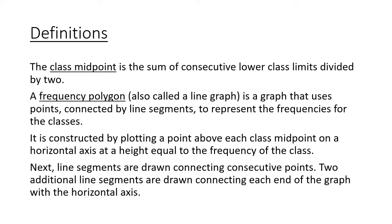A few definitions to start with. First, the class midpoint. Remember, classes are how we organize our data, and the class midpoint is formally defined as the sum of consecutive lower class limits divided by 2, or basically the average of two consecutive lower class limits. The name is pretty descriptive in that it's the midpoint of our class, the middle value.